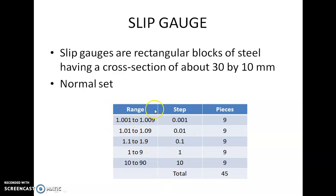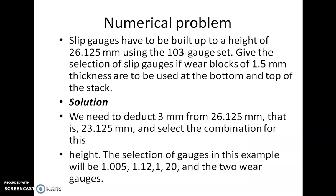The slip gauges are available in different thicknesses. For example, if a 26.125 mm combination has to be built up, protector slip gauges are placed at the two ends to avoid wear — they are called protector slip gauges or wear blocks, having a standard dimension of 1.5 mm each. So we subtract 3 mm from 26.125 mm, leaving 23.125 mm to be built by the ringing process.